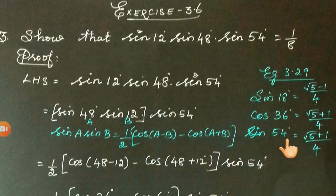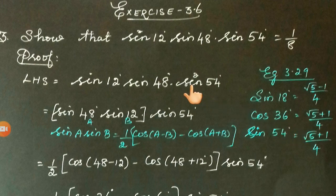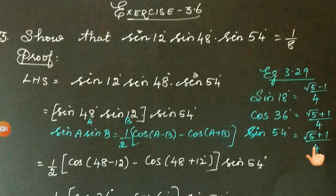In Example 3.29, we saw sin 18°, cos 36°, sin 54°. So these trigonometric ratio values you should remember, because in our sums, in many sums, we will use these values. Sin 54° value is (√5 + 1)/4. So out of these three trigonometric ratios, you know sin 54° value.